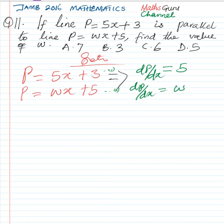And if the gradient, that is the change in P over the change in x here is 5, and the gradient here is w, it means that w is equal to 5. Therefore, D is the correct option.